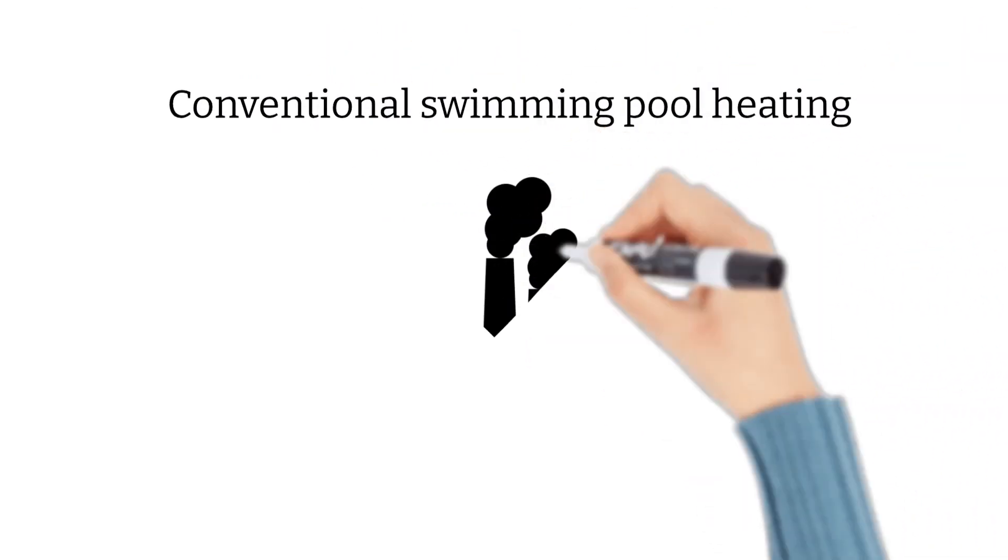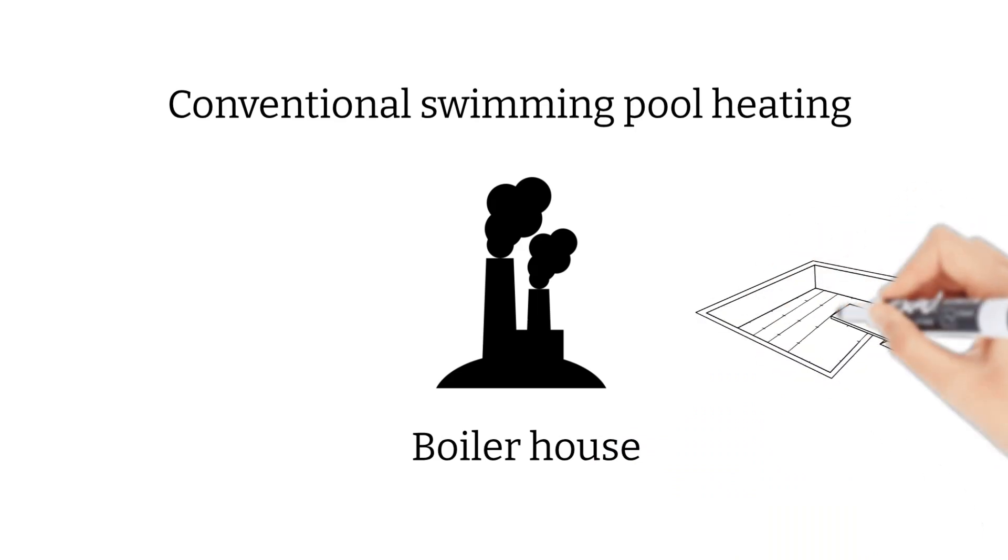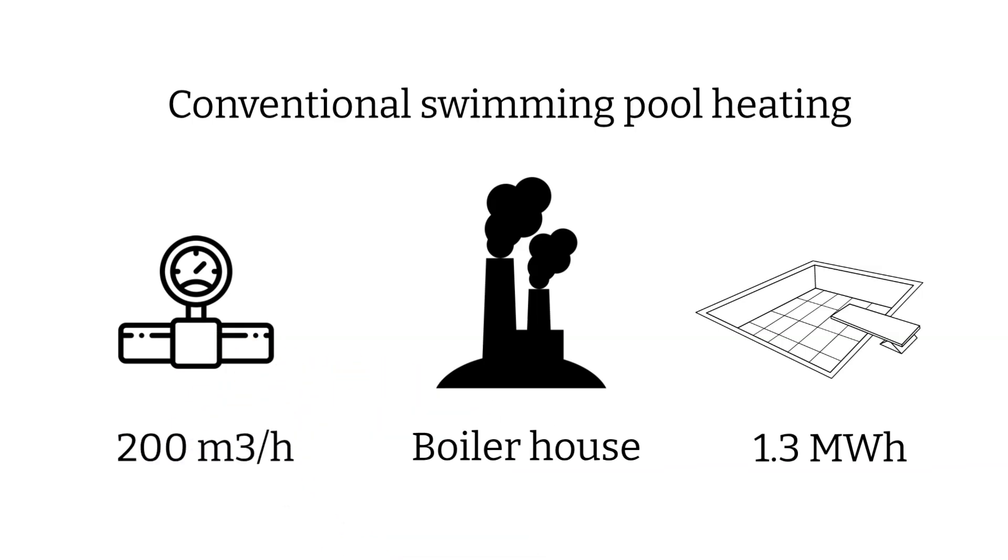Conventional pool heating uses gas boilers to heat the water, requiring 1.3 megawatt hours. This equates to 200 cubic metres per hour of gas consumption.